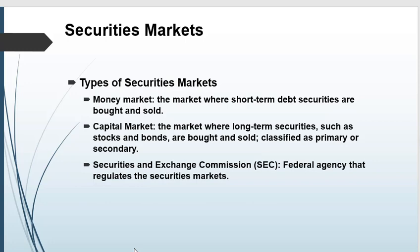So the types of securities markets — there are really a couple of ways we can talk about this. The first way is related to time. The money market covers all short-term instruments that have a lifespan at issue of less than one year. The capital market is everything else, which essentially boils down to stocks and bonds.